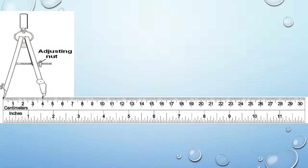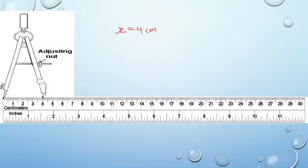In the previous videos we discussed that we can make a circle using a compass. You will now learn how to draw a circle of a specific radius. If you are asked to draw a circle of radius 4 cm, first take the compass. Place the needle portion at 0 on the scale — place the pointed end of the compass at the starting of the scale, at 0.